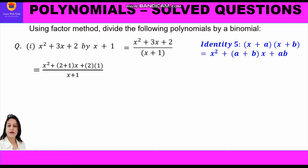We substitute these values in the identity and write in the numerator: x² + (2+1)x + (2×1), upon (x+1). The two factors are (x+2)(x+1) upon (x+1). Now (x+1) in the numerator and denominator cancel, and we are left with the answer x plus 2.